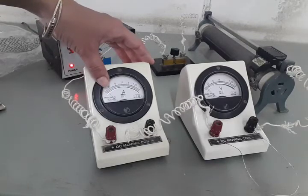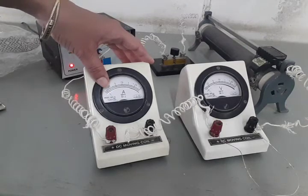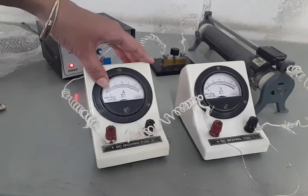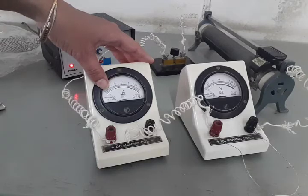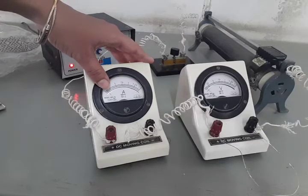So suppose the pointer has moved to two divisions. So we have to take the reading two division and we have to multiply it with the least count. What is the meaning of least count? Let us understand.